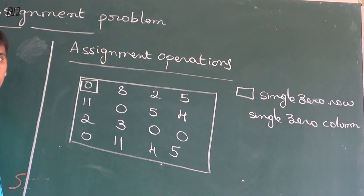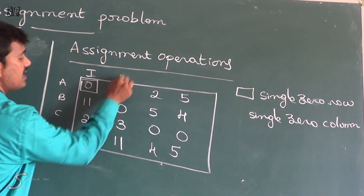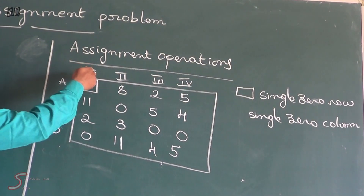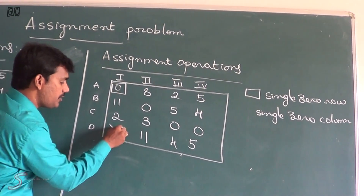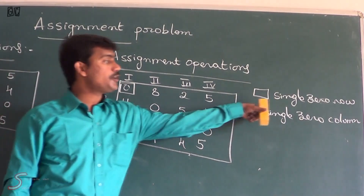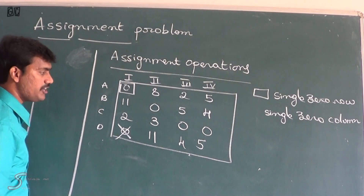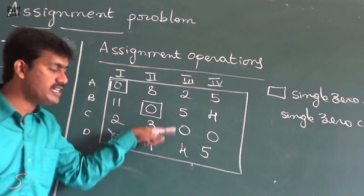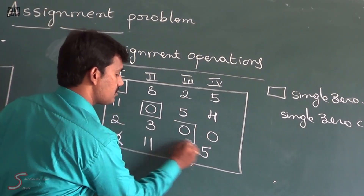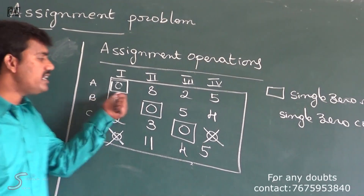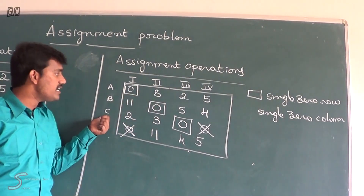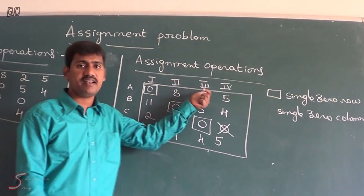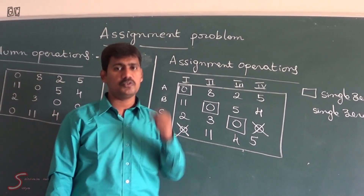We look for single-zero rows and single-zero columns to assign jobs. We have employees A, B, C, D and tasks 1, 2, 3, 4. We assign the first job to the first candidate A; that job is no longer available to others. Continuing with single-zero rows and single-zero columns, we find: A is assigned to task 1, B is assigned to task 2, and C is assigned to task 3. But the number of assignments is only 3, not equal to the order of the matrix, so one candidate D is left out. We must move on to the Hungarian method of assignment.